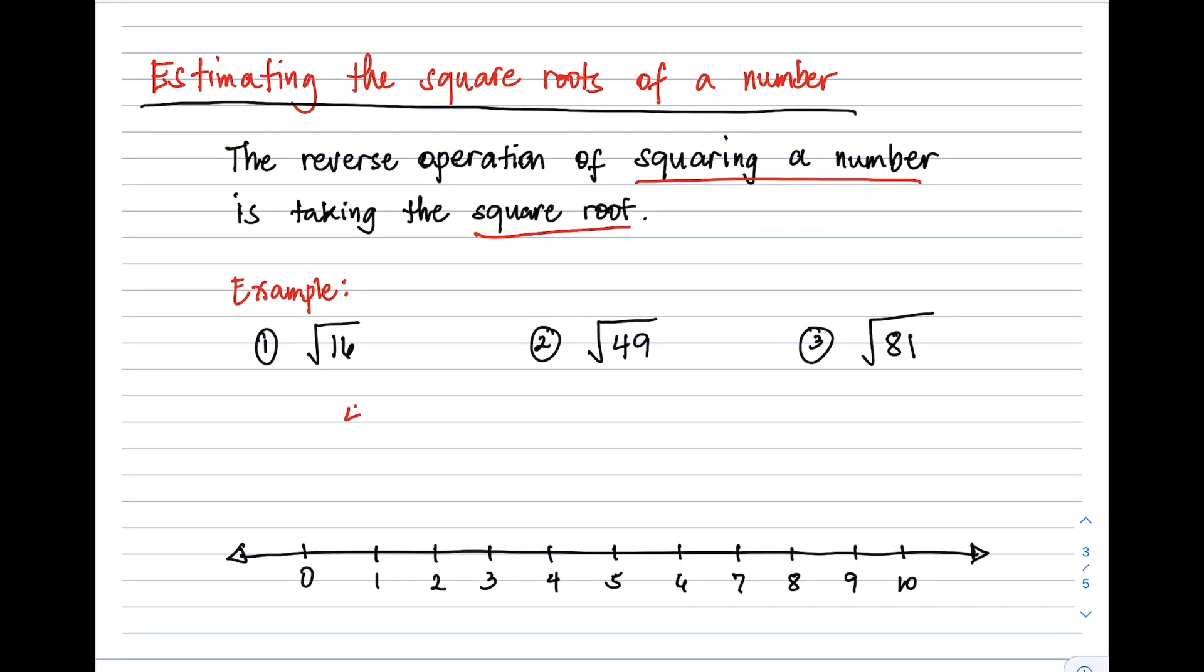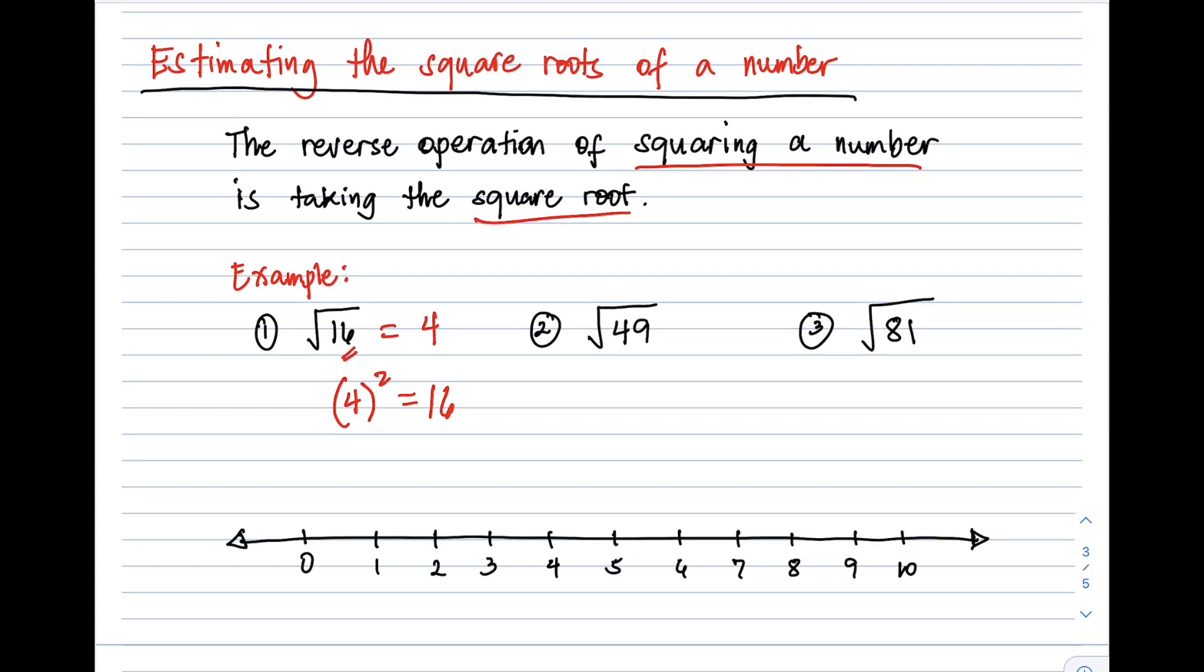Let's have example number one: square root of 16. Since we know that 4 squared equals 16, therefore the square root of 16 is positive 4. Next, number two, square root of 49, that is 7 squared equals 49, so therefore square root of 49 is equal to 7. Number three, we have square root of 81, so 81 is the same as 9 squared, therefore square root of 81 is equal to 9.